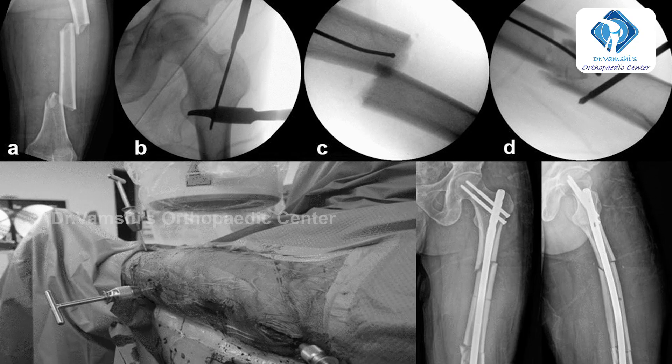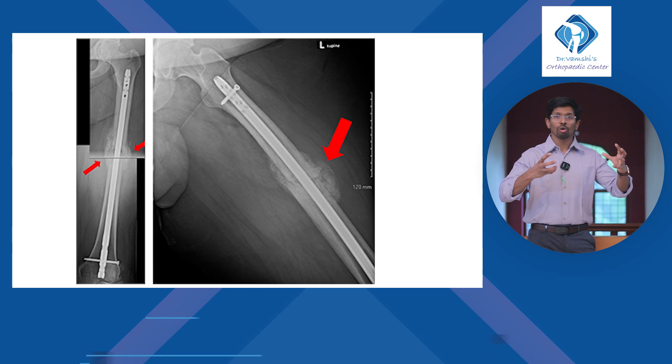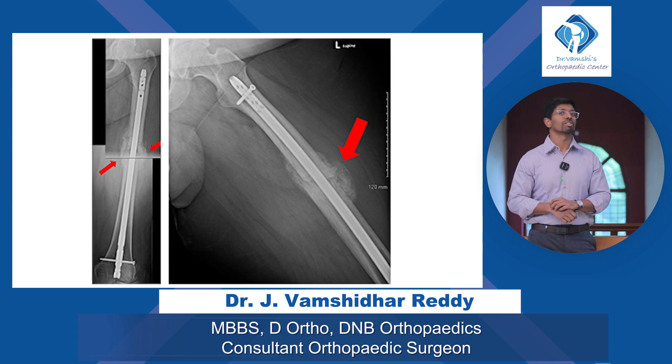In the procedure, manual traction is applied on a fracture table in the operation theater to reduce the fracture. We perform closed reduction and internal fixation with an intramedullary nail and screws. This is one of the most common treatments for a femur mid-shaft fracture.